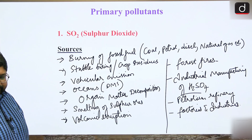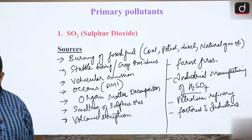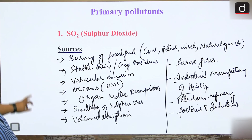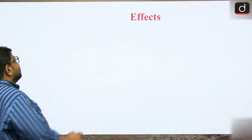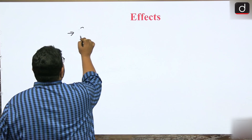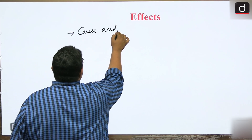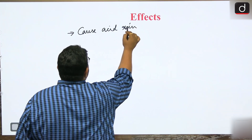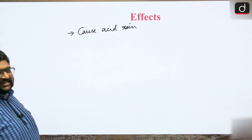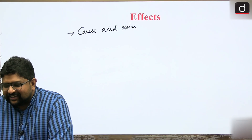Now, what are the effects of sulphur dioxide? First and foremost, SO₂ causes acid rain. It is one of the main acidic gases responsible for acid rain.